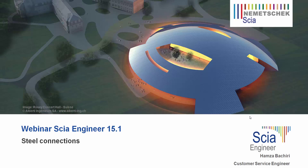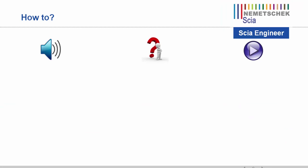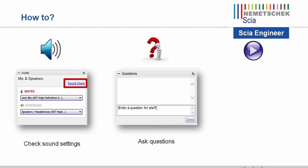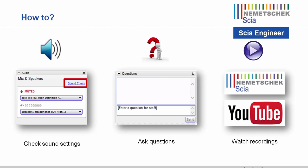The purpose of today's webinar is to get some insight into the possibilities regarding steel connections in SIA Engineer. Before we start, make sure you've checked your sound settings in the GoToWebinar window. Do not hesitate to ask any questions during the webinar via the text box. I will try to answer them immediately; if there are a lot of questions, I will answer them afterwards via email. This webinar will be recorded and published on our website and YouTube channel.